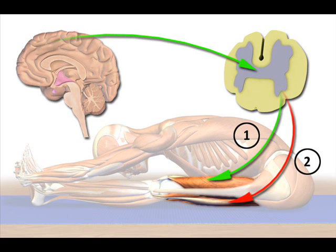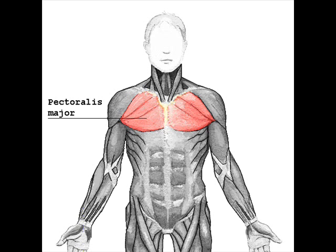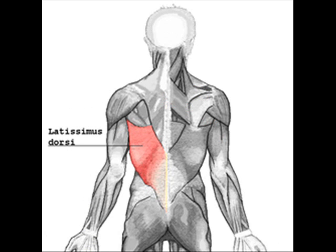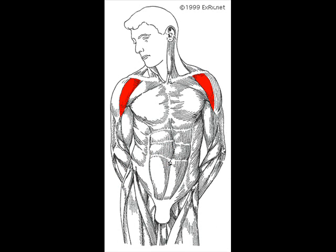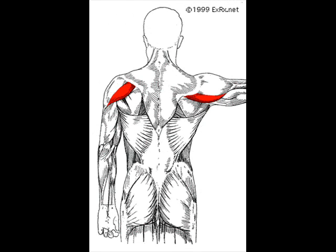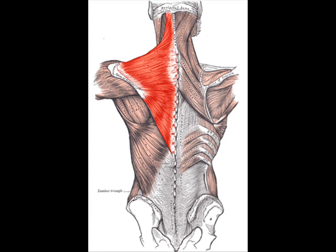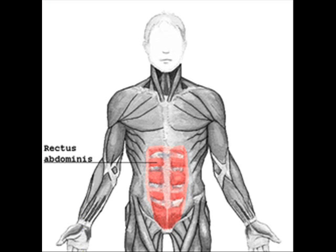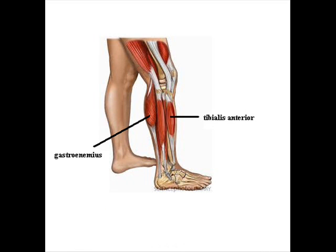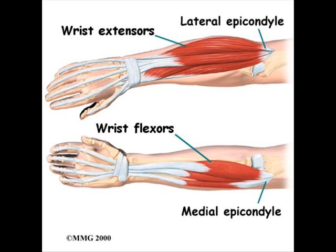Here are other muscles that commonly work as antagonistic pairs in the body. Pectoralis major and latissimus dorsi, found in the chest and back. Anterior deltoids and posterior deltoids, found in the front and back of the shoulder. Deltoids and trapezius, found in the upper back and shoulder. Spinal erectors and rectus abdominis, found in the abdomen and lower back. Gastrocnemius and tibialis anterior, found in the shin and calf. Extensors and flexors, found in the forearm.